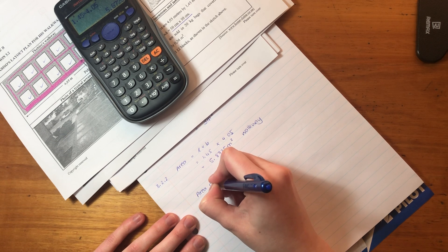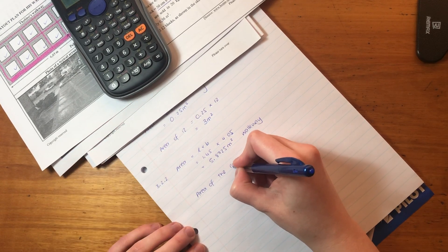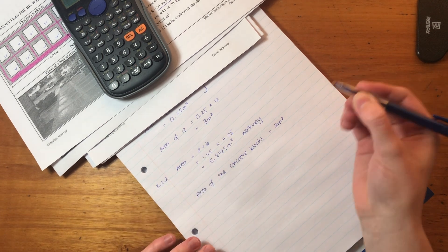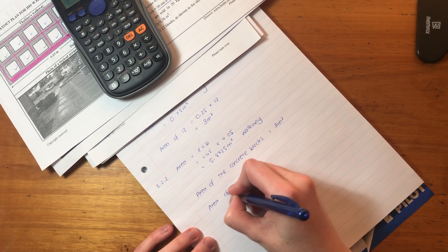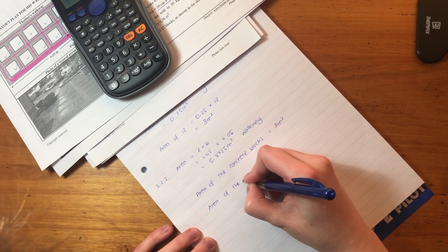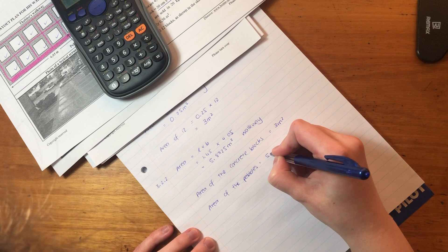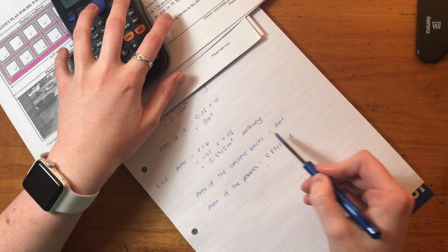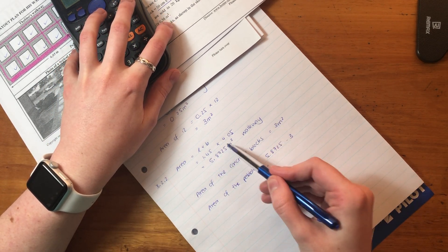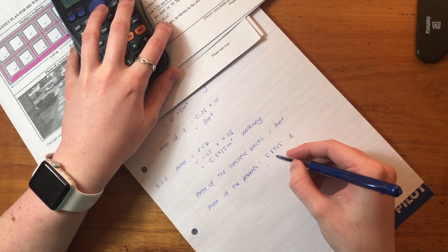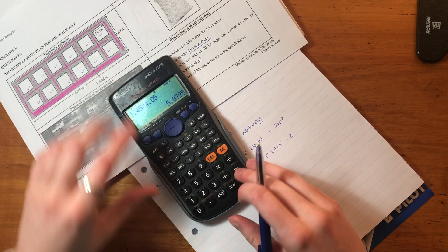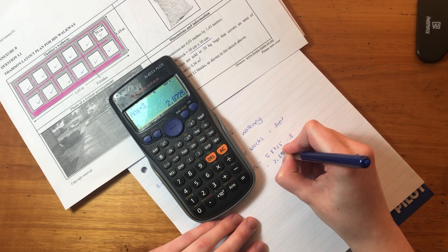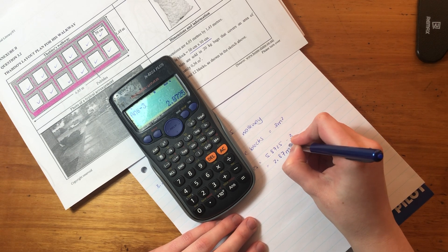We know that the area of the concrete blocks equals three meters squared. We just calculated that. Therefore, the area of the pebbles is going to equal 5.8725 minus three. So we basically are removing the area of the concrete blocks from the area of the walkway to get the area of the pebbles. So I'm just going to subtract three. And the area of the pebbles is 2.87 meters squared.